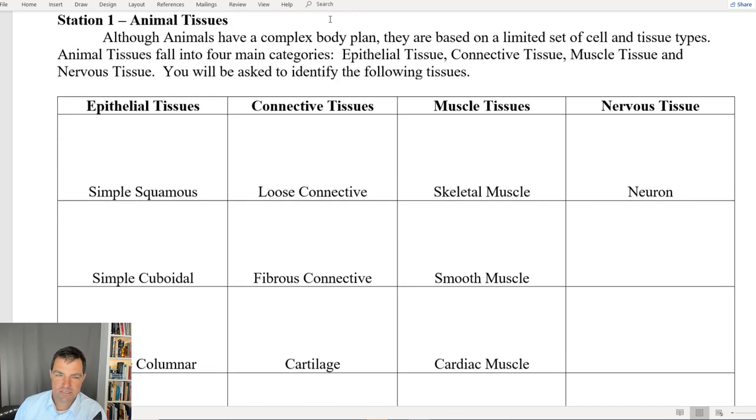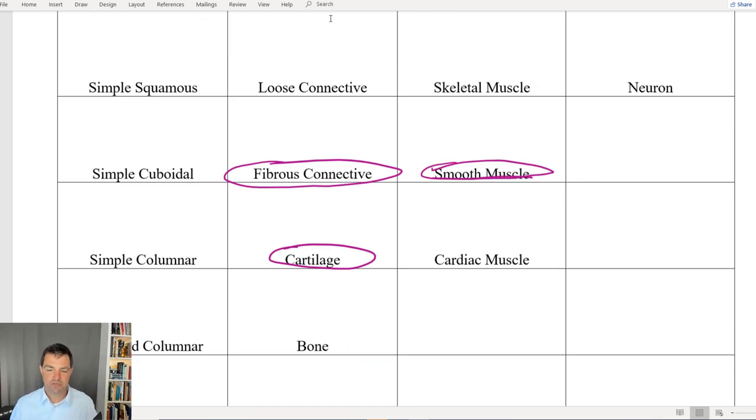The next part is on tissues. And so what will happen here is I will simply give you a picture of a tissue. Say I give you a picture of smooth muscle. I'll just say name the tissue. And the answer I'm looking for is smooth muscle or cartilage or fibrous connective tissue, whatever the name of that particular tissue is.